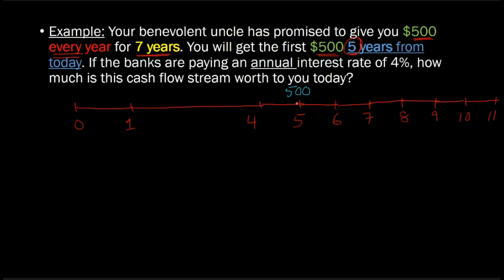If you count the number of $500s, you get the first one at the end of year five — one, two, three, four, five, six, and the last one, seven. Mind you, this is still very much a seven-year annuity. This is very important. Often you'll see a question that says your uncle has promised to give you a seven-year annuity but it's delayed by five years, and students are thrown off because the timeline goes all the way out to eleven years. But it's a seven-year annuity because there are seven $500 payments — they start late, but when they do start, you just get seven of those.